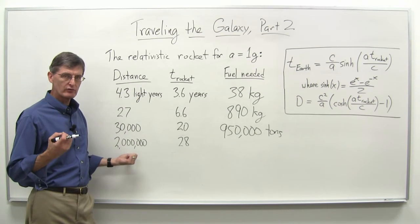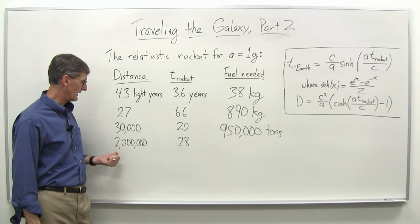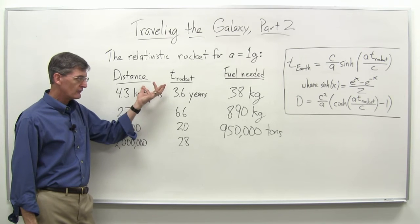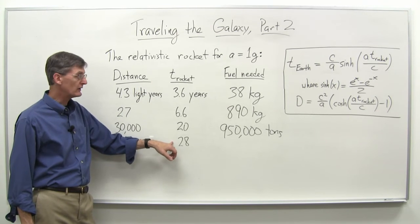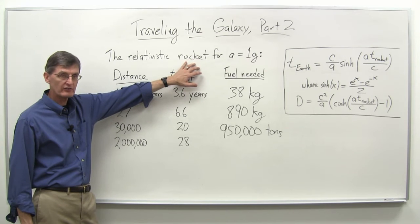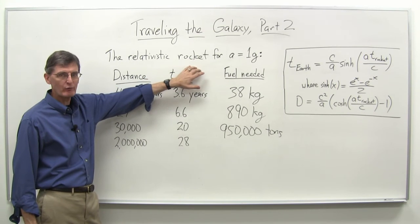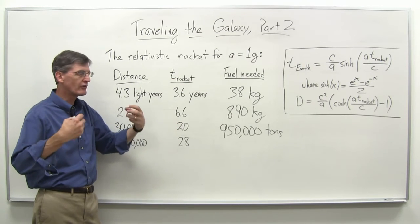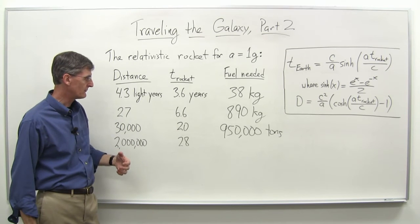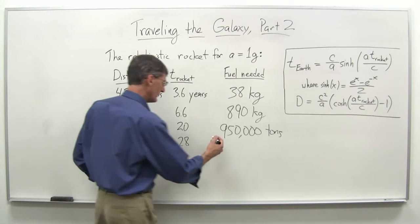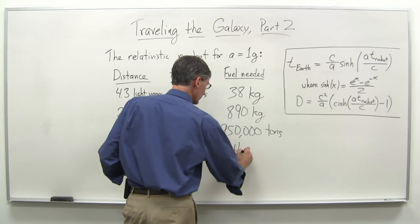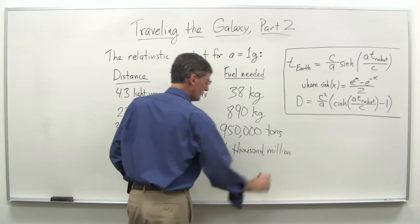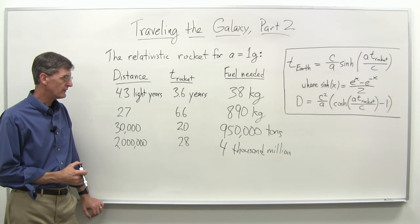Just for interest, we could even imagine traveling to another galaxy, the Andromeda galaxy, 2 million light years away. The relativistic analysis says we could get there in 28 years with 1g acceleration, but that assumes we can keep that 1g acceleration going. As we get faster, closer to the speed of light, it gets harder to keep up that acceleration. In this case, we need about 4,000 million tons of material.